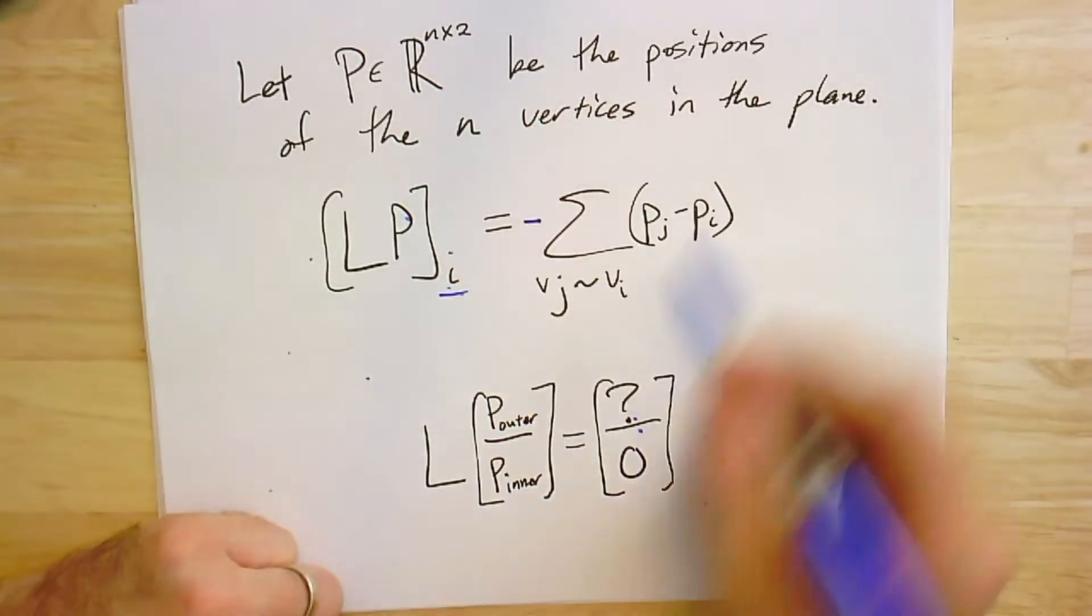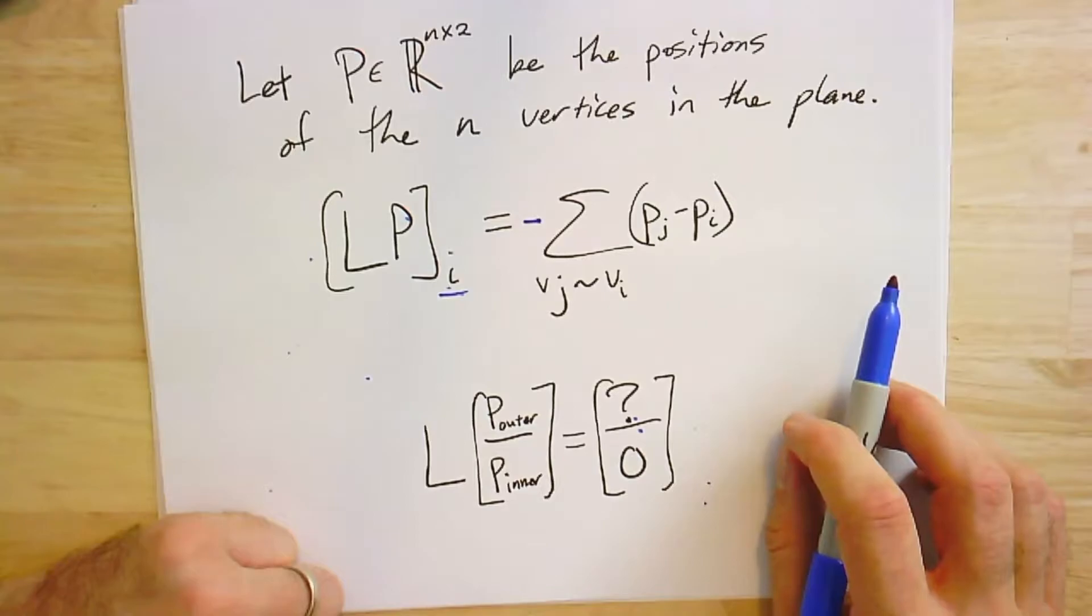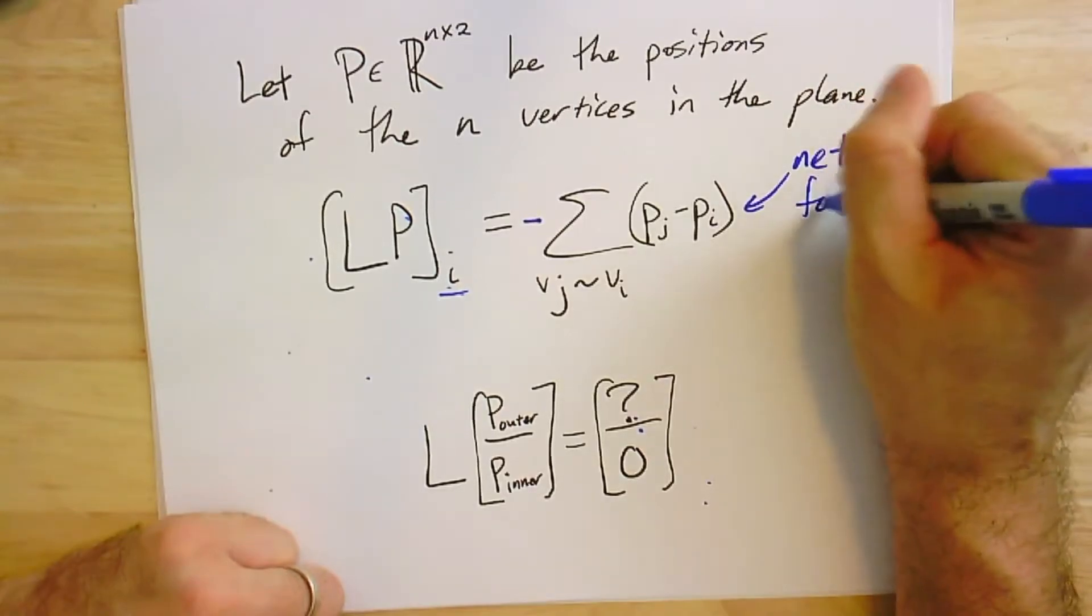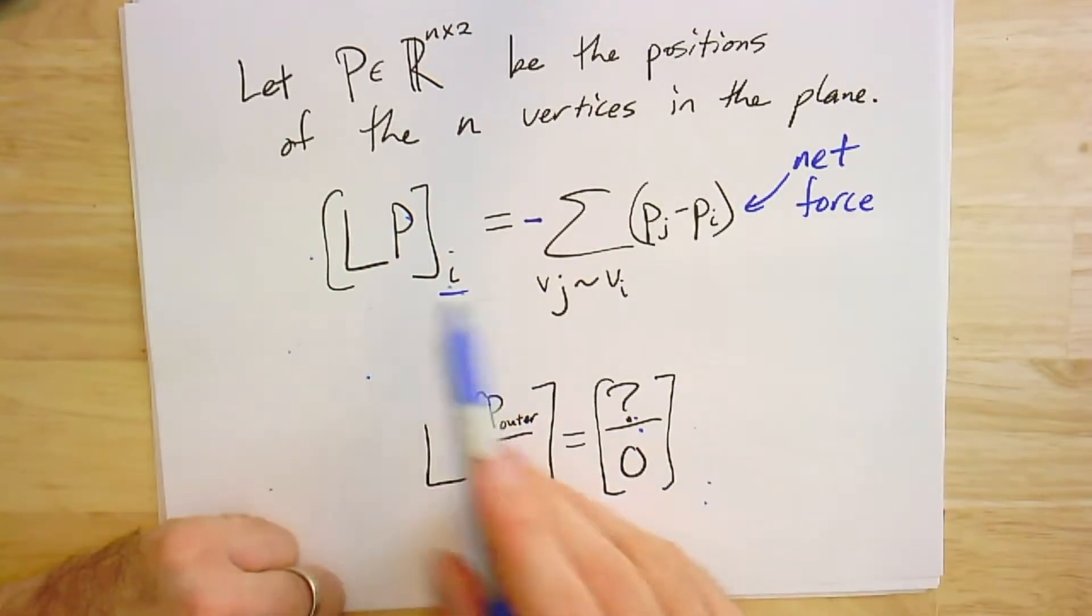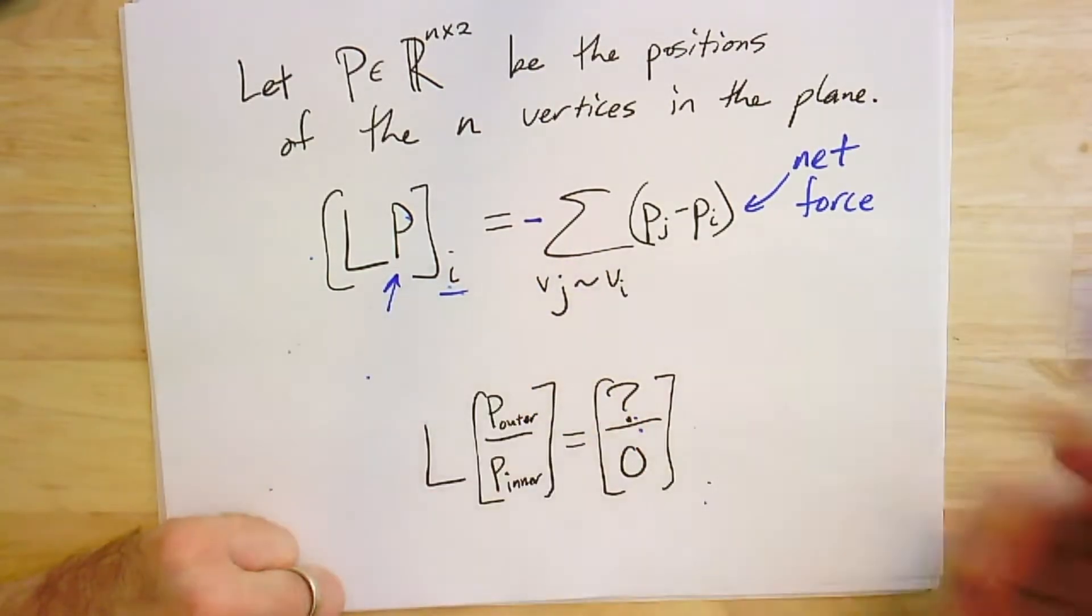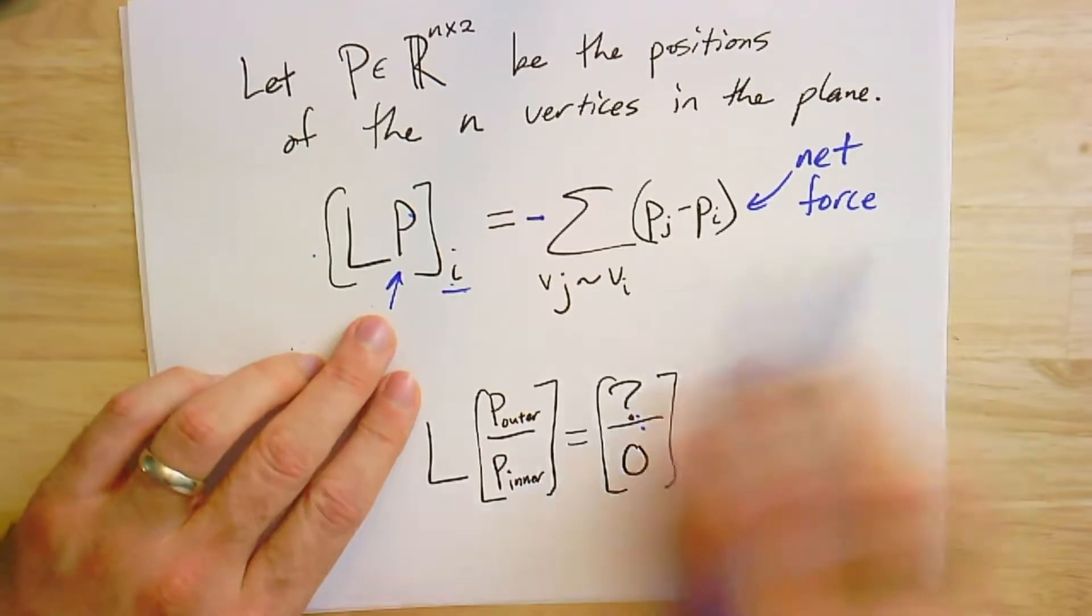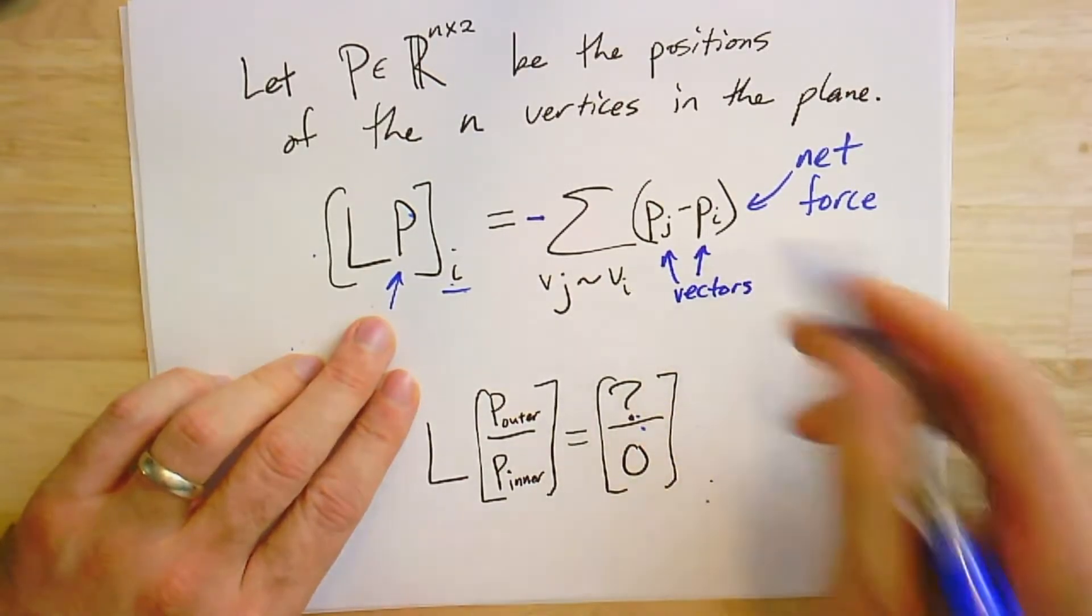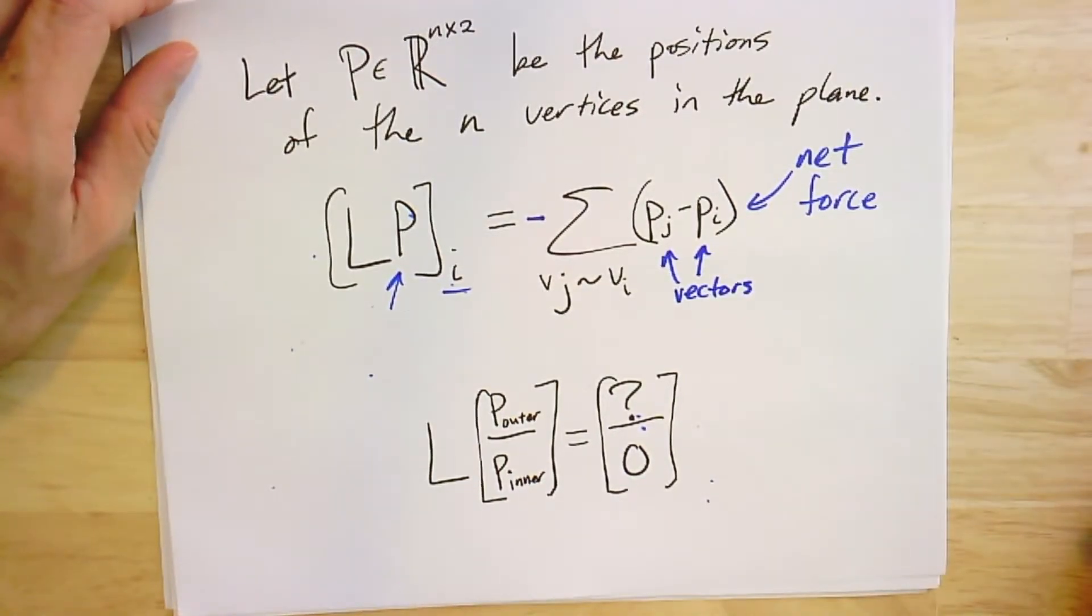So if I take the positions of all my points, and you think of this as a vector like Rn by 2, right? So it's like n rows, two columns, and the two columns are the x and y coordinates of all the points, or all the vertices in the plane. Then what I get here is that this i-th component of LP is, I should be careful, technically this is minus this, it's the sum over all the vertices adjacent to i of pj minus pi. This is the net force.